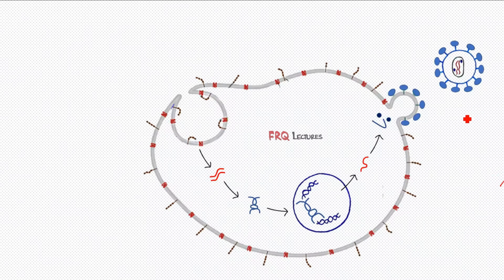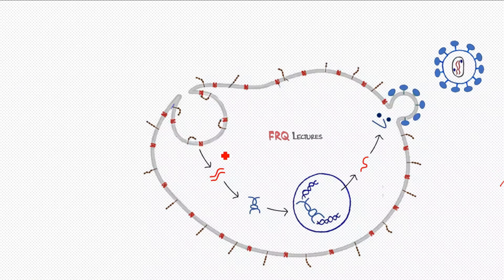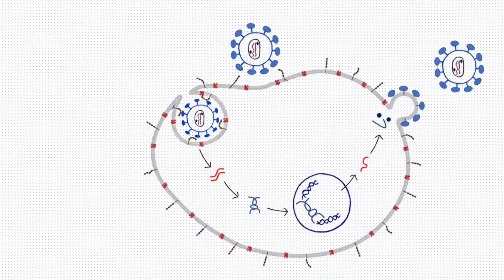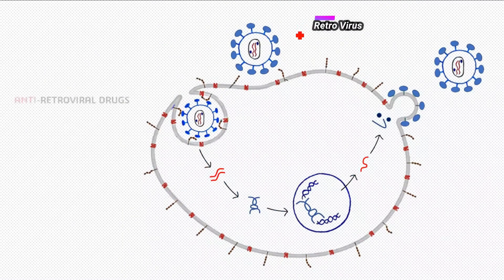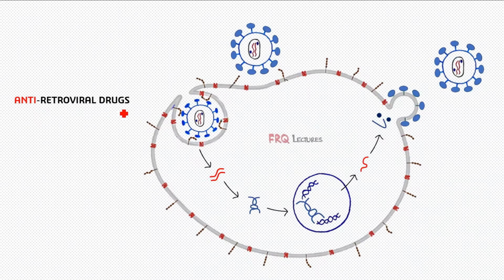So we started from HIV and as a result got multiple copies — the daughter HIV. You can see many arrows here; we can stop or halt this replicative cycle at many stages using certain different drugs. Since HIV belongs to the category of retrovirus, the drugs used against it are known as antiretroviral drugs, and there are many different categories of these.